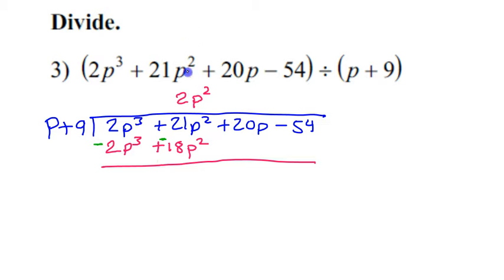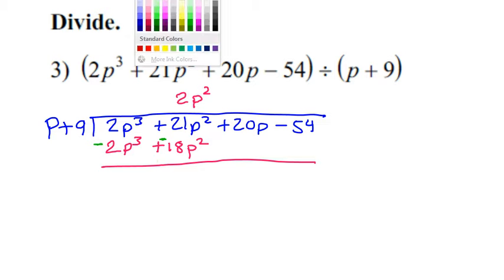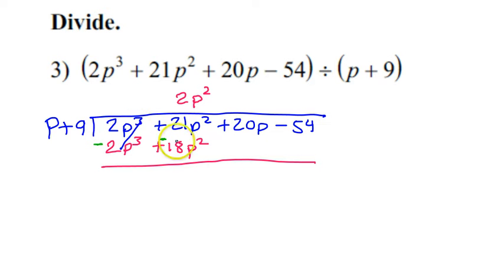So I would subtract these, and so these are going to cancel out, and this is going to give me 3P squared. So now I basically start over. So I'm going to bring down my 20P and my minus 54. So I start over, and I say P times what is going to give me 3P squared? 3P. So I'll put my 3P right there.